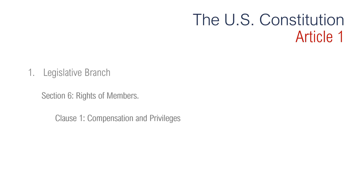Moving on to Section 6, regarding rights of members. Clause 1 is regarding the compensation and privileges of members. Congressional salaries are to be paid by the United States Treasury rather than by the members' respective states. The original salaries were $6 per day, and in 1857 they were $3,000 per year. Both representatives and senators were paid a base salary of $174,000 in 2012. This clause also says that members cannot be arrested for things they say during speeches and debates in Congress — this immunity applies to the Capitol building itself, not to their private lives.